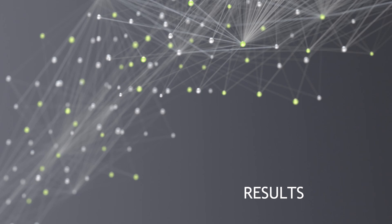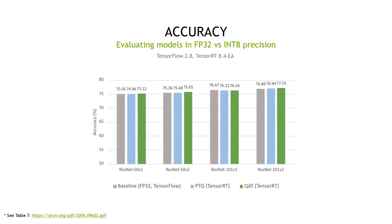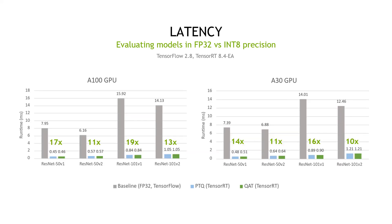Now let's look into some accuracy and latency results for recent models. For accuracy, we can see that there is little to no difference between the baseline FP32 and the QAT models across different variants of ResNet. ResNets are pretty stable for quantization, which is why the gap between PTQ and QAT is very small. EfficientNets are a good example where QAT preserves accuracy better than PTQ. From the latency aspect, PTQ and QAT have similar times and introduce more than 10x speedup compared to their FP32 counterparts. PTQ models can sometimes be a bit faster than QAT models since PTQ only quantizes layers which result in faster inference, whereas QAT model performance depends on the placement of QDQ nodes and their fusions.